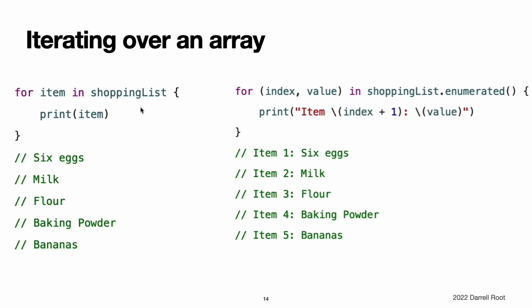If you need the integer index of each item as well as its value, use the enumerated() method to iterate over the array instead. For each item in the array, the enumerated() method returns a tuple composed of an integer and the item. The integers start at zero and count up by one for each item. If you enumerate over a whole array, these integers match the item's indices. You can decompose the tuple into temporary constants or variables as part of the iteration. For more about the for-in loop, see for-in Loops.